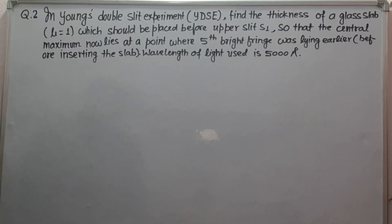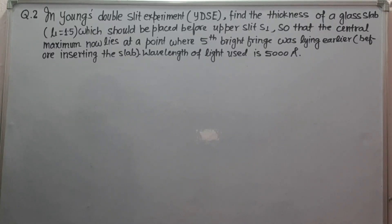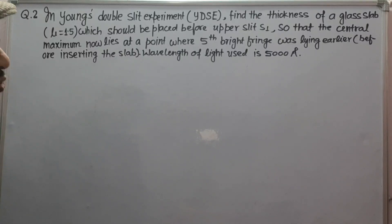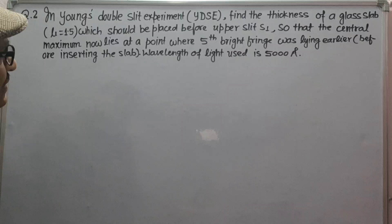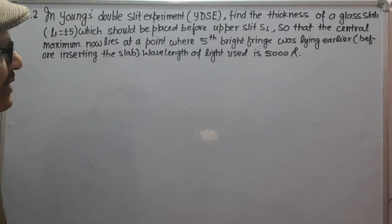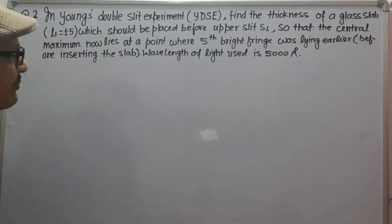The main question: In Young's double slit experiment, find the thickness of a glass slab of refractive index 1.5 which should be placed before upper slit S1 so that the central maximum now lies at a point where the fifth bright fringe was lying earlier, before inserting the slab. The wavelength of light used is 5000 angstrom.